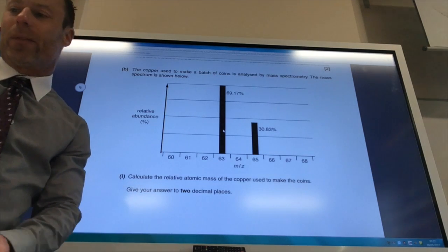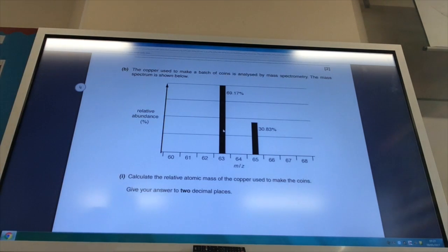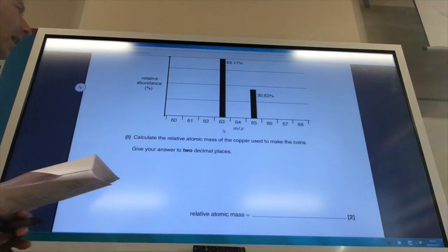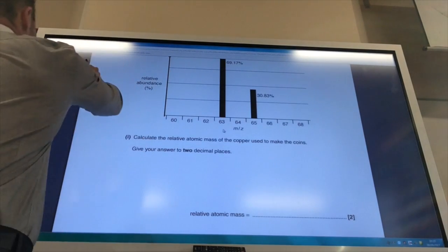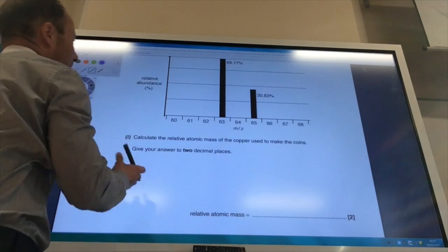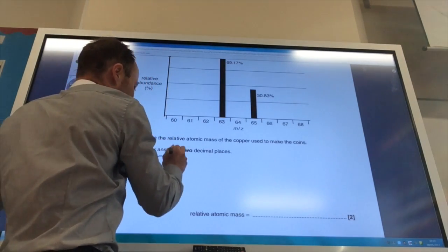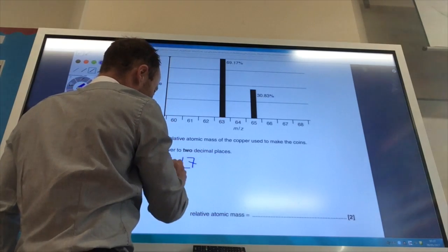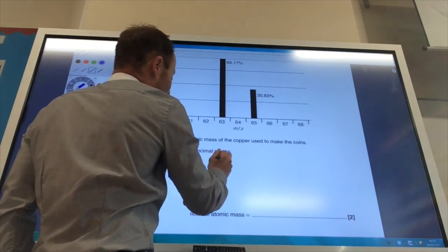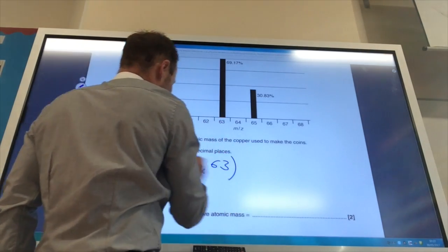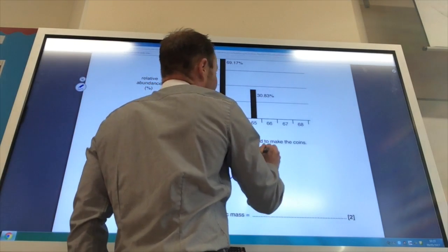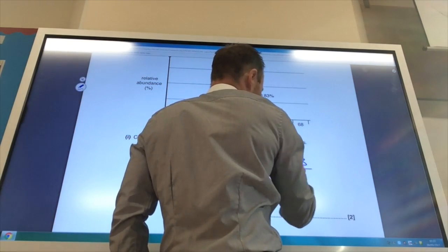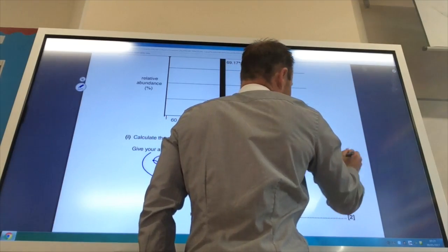So they now want me to calculate the relative mass of a sample of copper. They've given me the mass spectrum, so it's relatively straightforward for this. So this is going to be 69.17 over 100 times 63 plus 30.83 over 100 times 65.